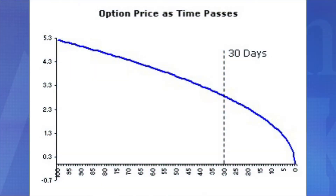A risk premium on an option is equivalent to an insurance premium on a car or house — what the buyer of the option pays the seller to accept price risk. It depends mainly on volatility. The greater the volatility in the underlying futures price, the higher the time value. Similarly, the closer the strike price is to the futures price, the higher the time value, because the seller has a higher risk that the option will be exercised.